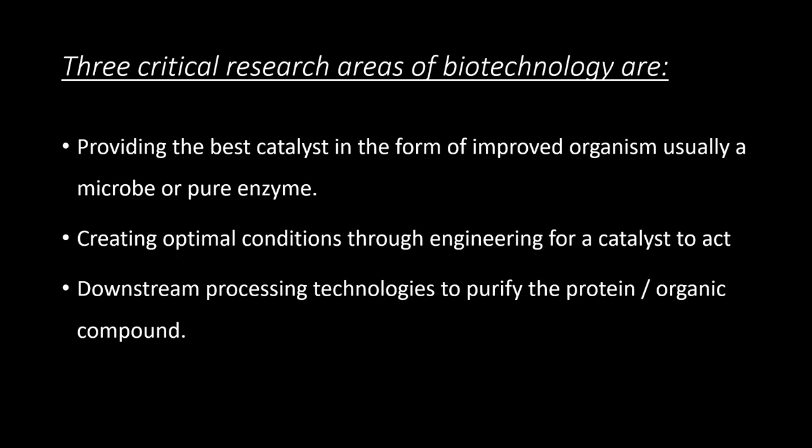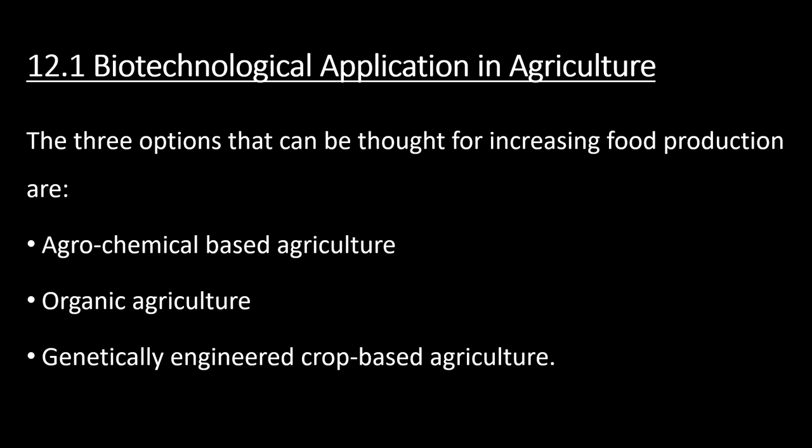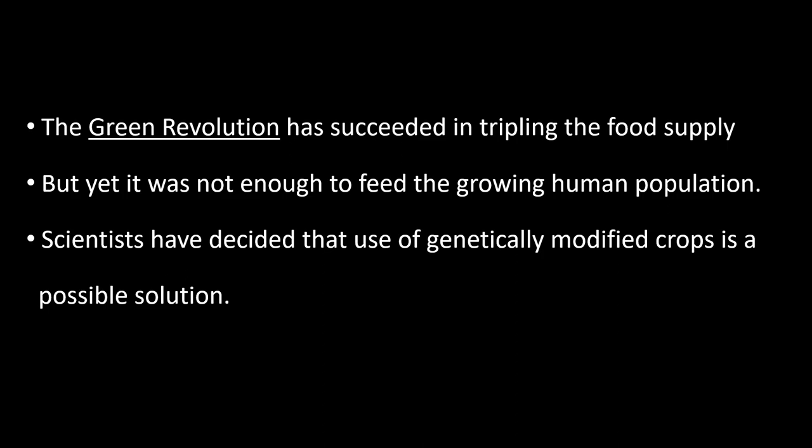Three options can be considered for increasing food production: agrochemical-based agriculture, organic agriculture, and genetically engineered crop-based agriculture. The green revolution has succeeded in tripling the food supply, but it is still not enough to feed the growing human population.